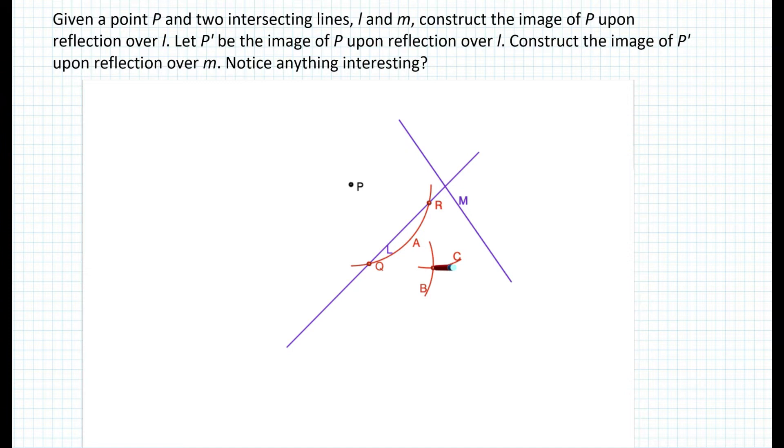So now we label those arcs, arcs B and C, and we construct a line through P that goes through the arcs of intersections. Now, the distance also needs to be the same. So we measure the distance from P to line L and draw an arc on the other side and label that point P prime.